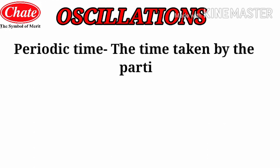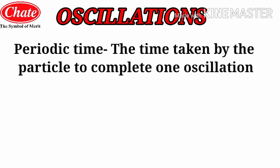Now we will understand further concepts related to oscillations. The first term is time period, also called periodic time. The definition is: the time taken by the particle to complete one oscillation is called the time period or periodic time. For example, if a particle takes two seconds or five seconds to complete one oscillation — starting from a point, going to the final point, and returning to its initial point — that duration is the time period. Time period is denoted by the capital letter T.